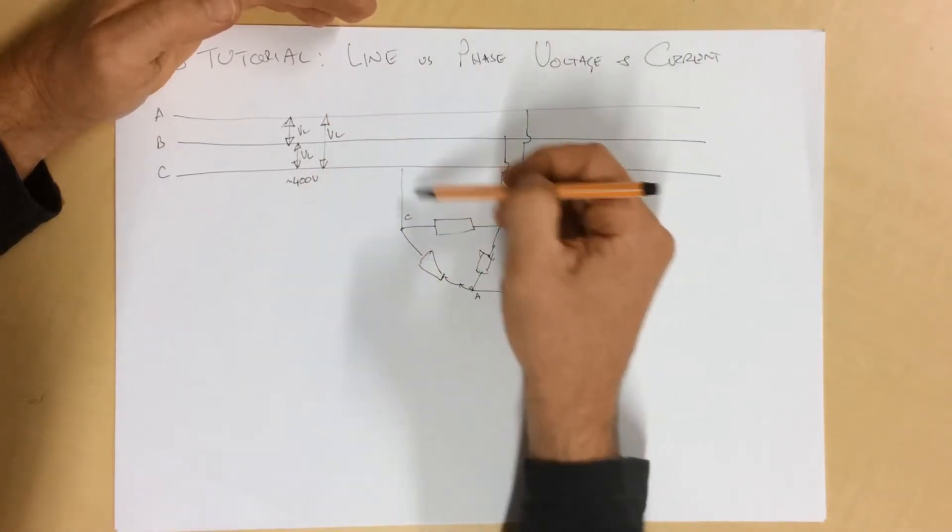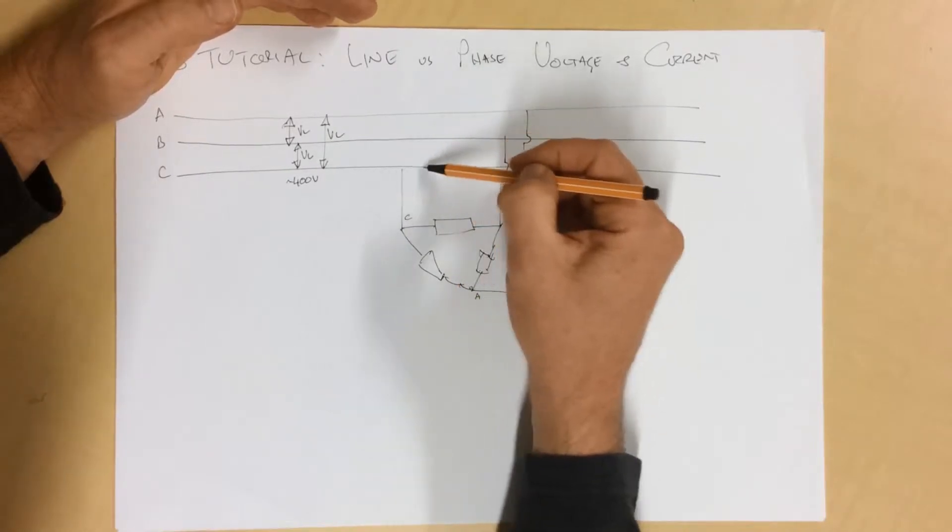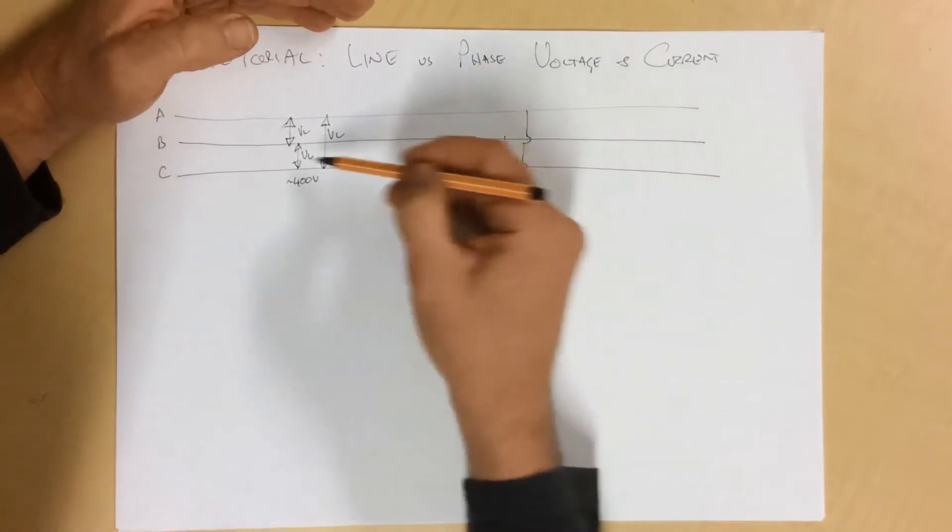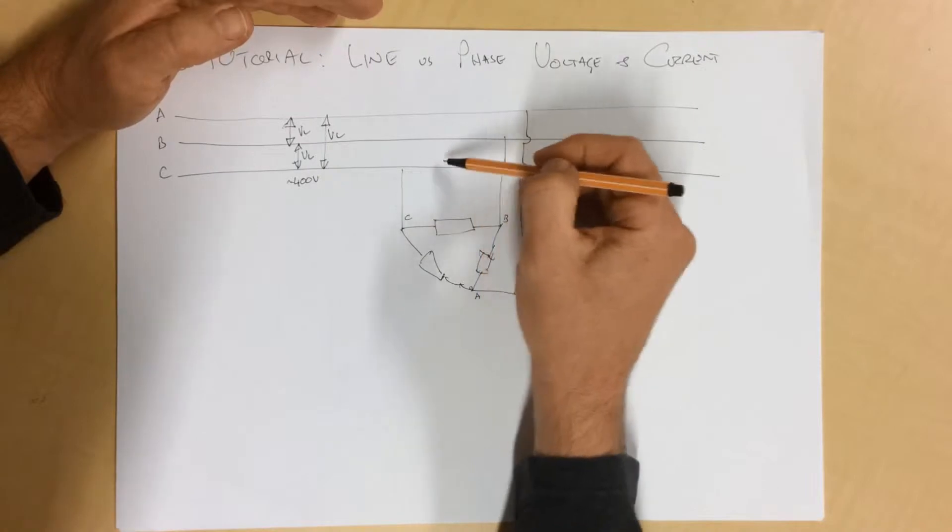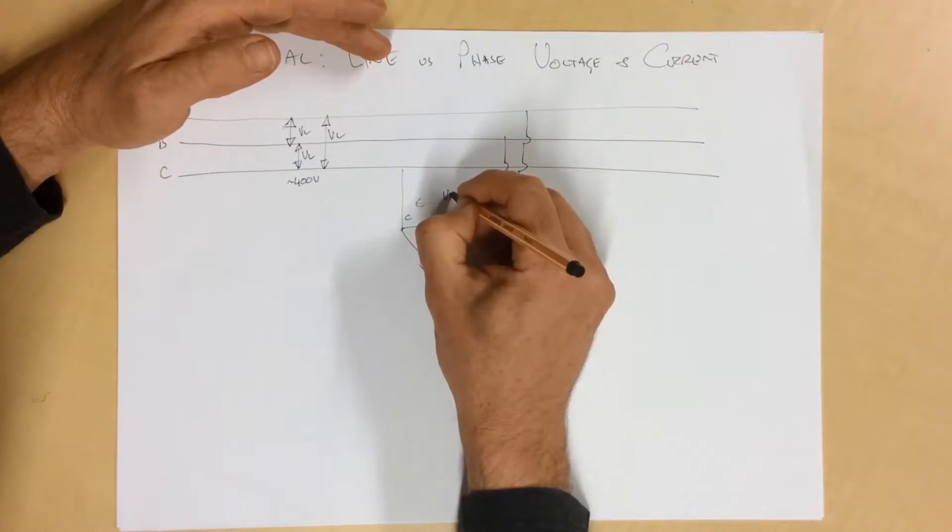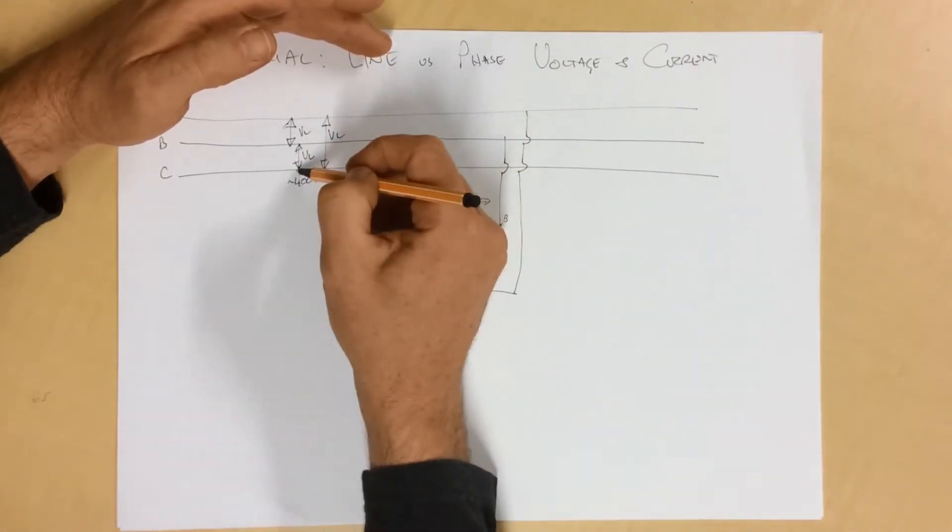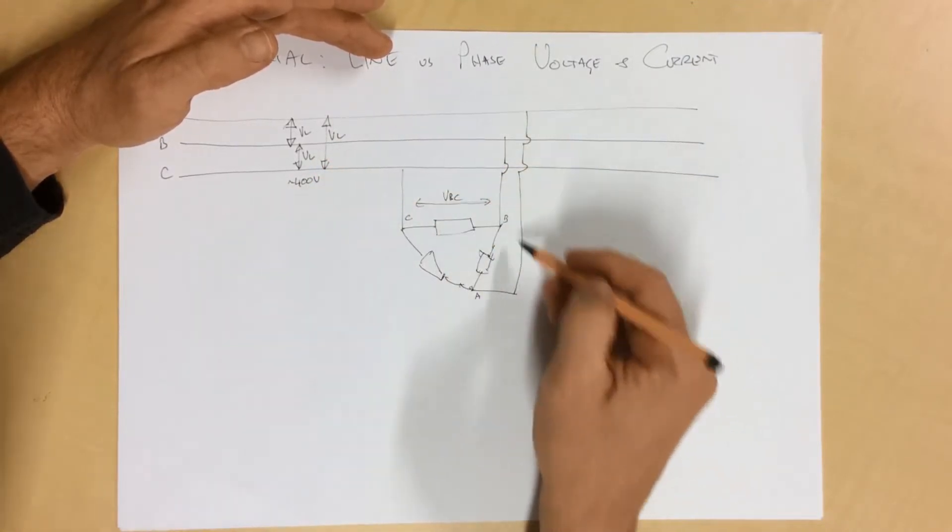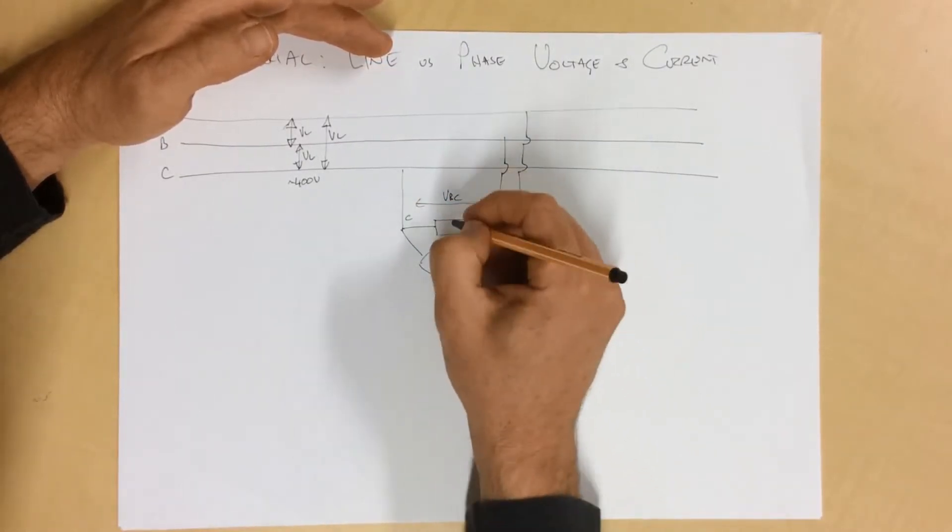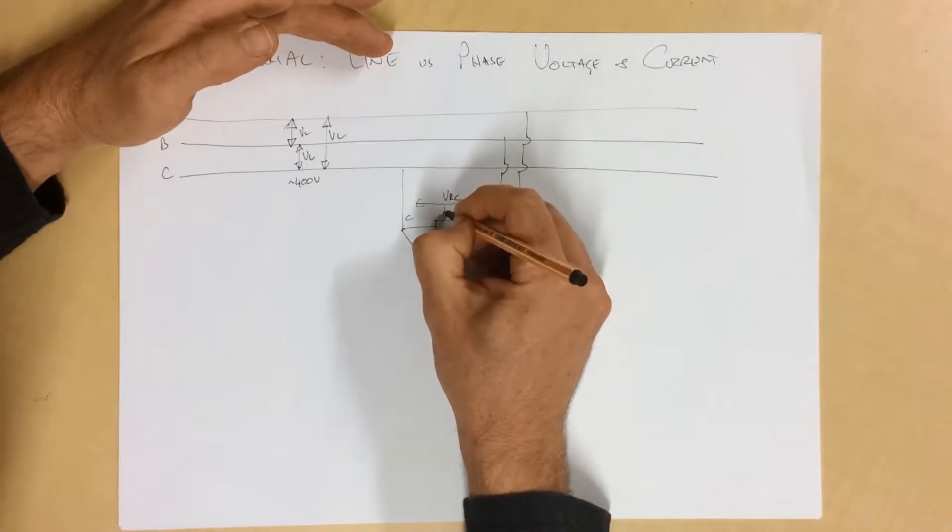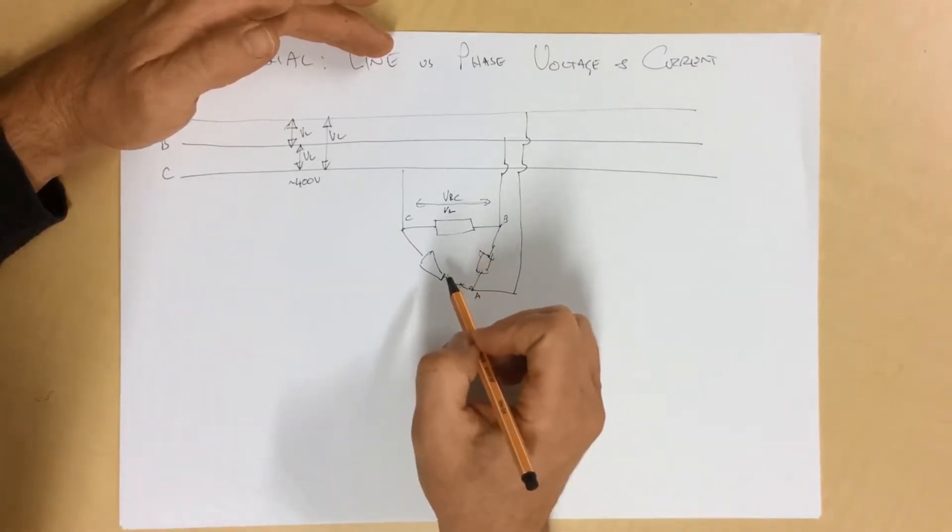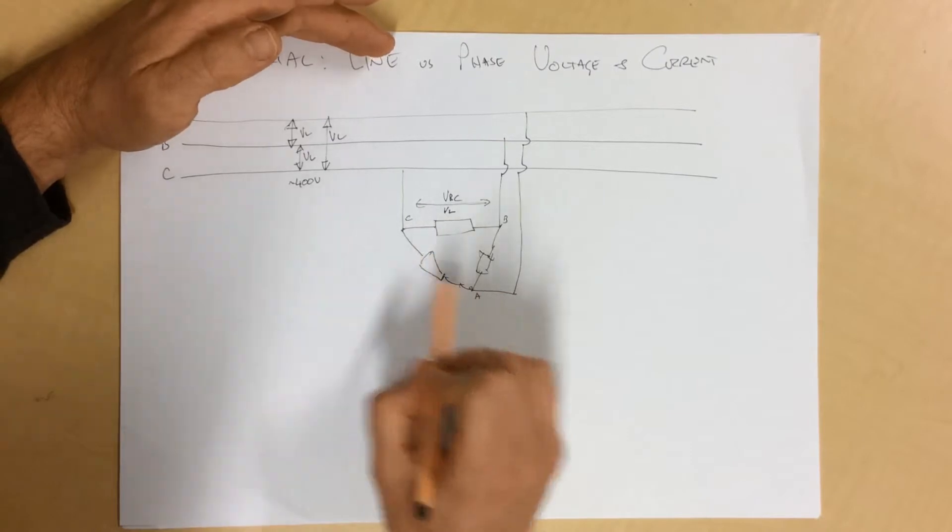Now, we have this line voltage here, and we can see that in this case here, between phase A and phase B. And this is confusing because we call it phase A and phase B, but it's line A and line B. So, I'll try and avoid that. Between C and B, this point here, this voltage here is voltage BC, the voltage between B and C. And similarly, between B and A and C and A. This is our line voltage here.